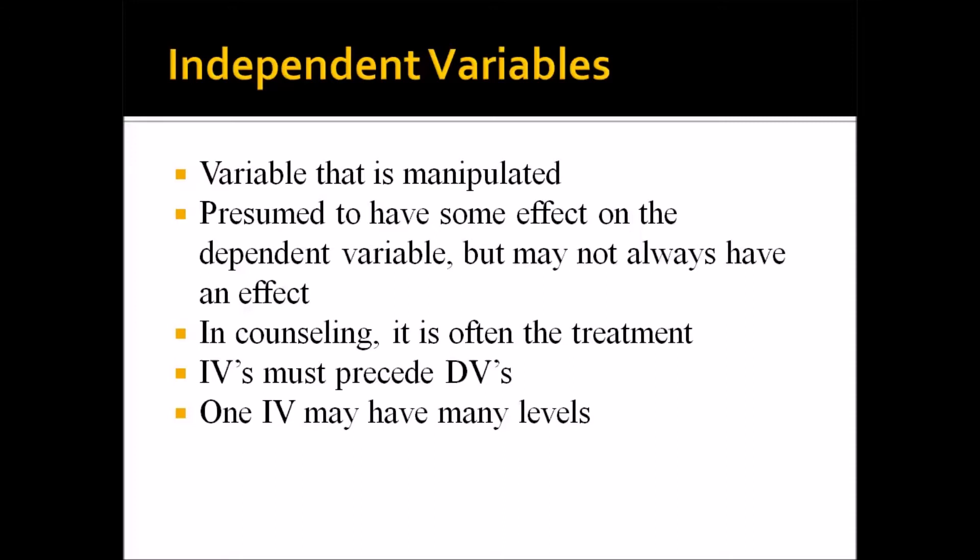One independent variable may have many levels. For example, say that you are studying the effects of a brief treatment for depression, and because the brief component is something you're focused on, you have one level where participants receive this brief therapy for six sessions, another level where they receive it for 12, and yet another level where they receive it for 18. So that's not three independent variables — that's one independent variable with three levels: six weeks, 12 weeks, and 18 weeks.